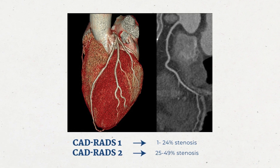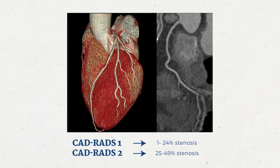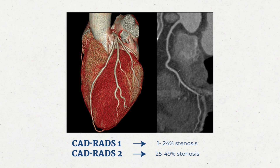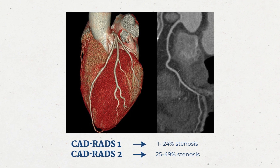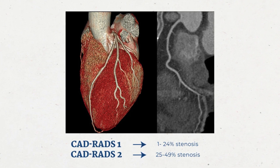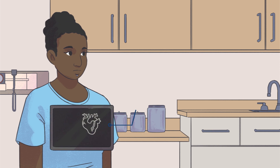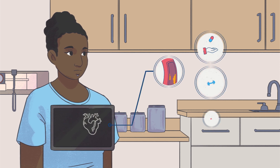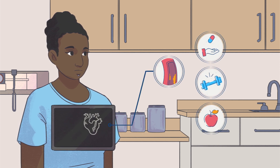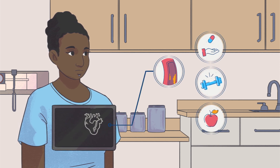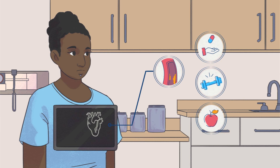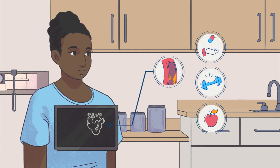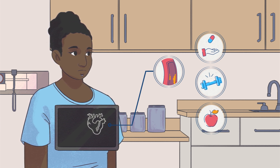For CADRADs 1 and 2, those patients have a 1 to 24 percent or 25 to 49 percent stenosis. Consider non-CAD causatives and preventative therapy with risk factor modification. These are examples of patients with mild stenosis and coronary plaque.